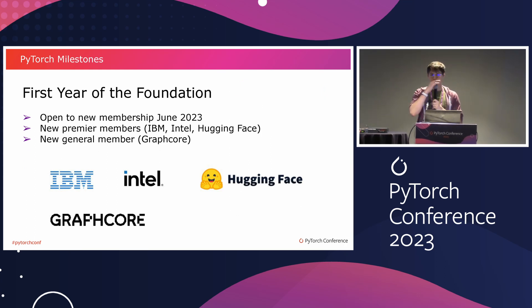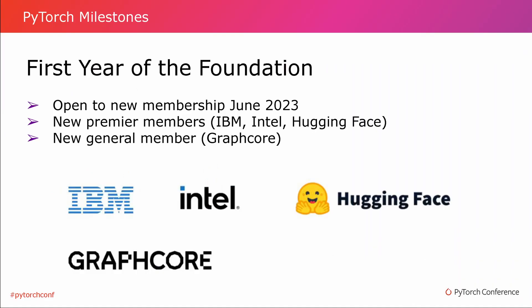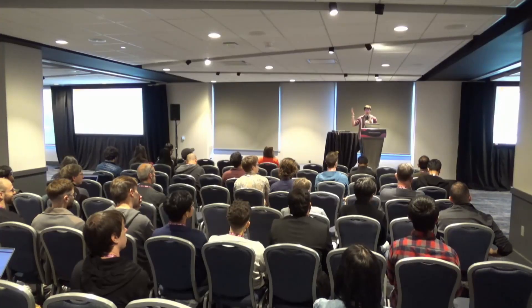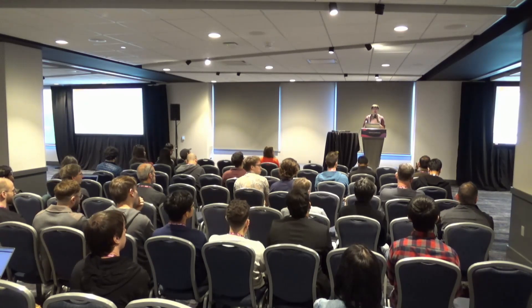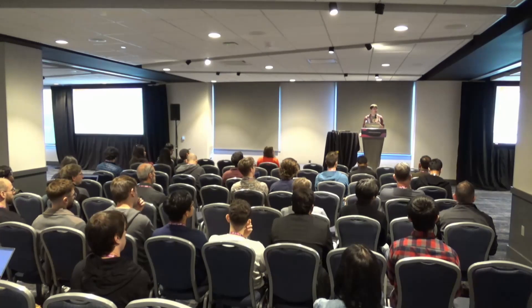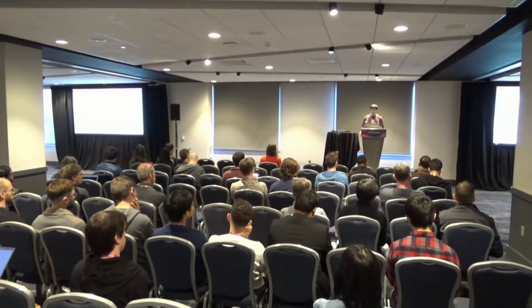As Joe and Ibrahim mentioned earlier, this has been the first year of the foundation, which opened to new membership in June this year. We already have — at the time of writing — four new members, and now we have two more, so it keeps growing faster than I can make slides. I'm especially excited about the diversity of members: IBM and Intel represent low-level components and new backends, while Hugging Face and Graphcore are more high-level and user-facing. It's very exciting to see the foundation growing in all directions.